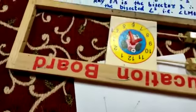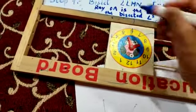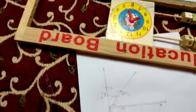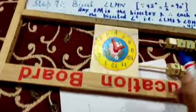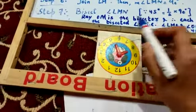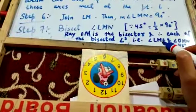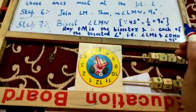So this ray OM jo hai, that is the bisector. Ray OM is the bisector. And each of the bisected angles, angle LMO or angle OMN, and LMO and OMN they are both equal to 45 degree.